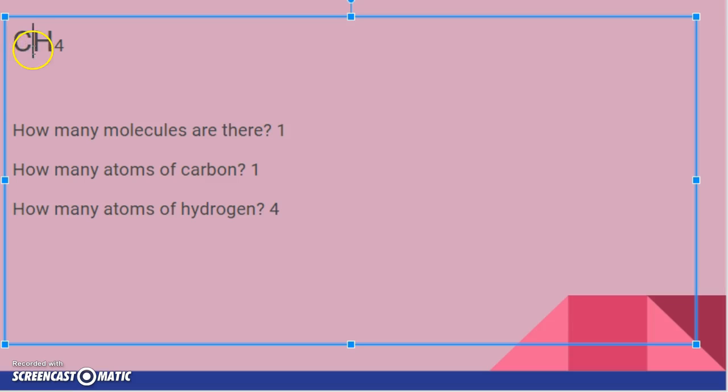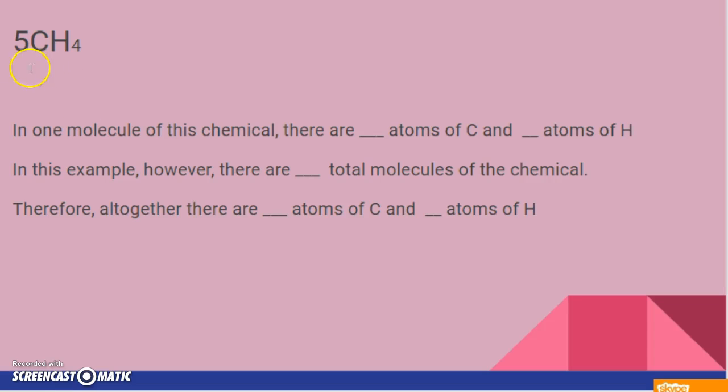Just like when there's no number for a subscript, we assume it's a one. If there's not a number in front, we also assume it's a one. So what about if I had 5CH4?